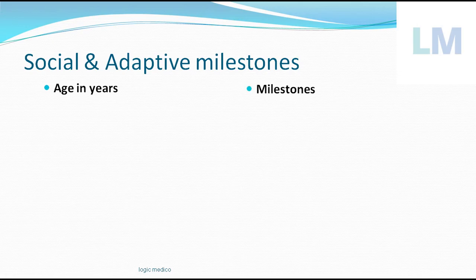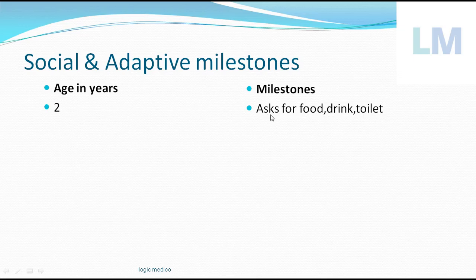At two years of age, the child is able to ask for food, drink, and also asks to go to the toilet. To remember: in India, 'number two' means going to the toilet — so 'two' reminds us of toilet. Before going to the toilet the child needs food and drink, so all of these come at two years of age.